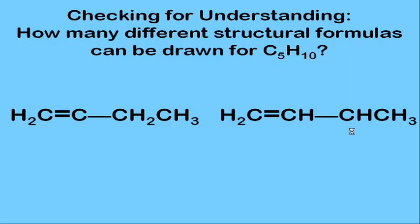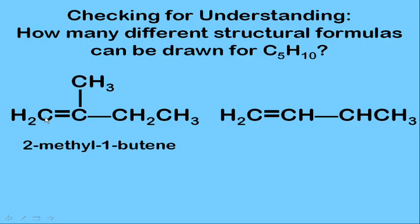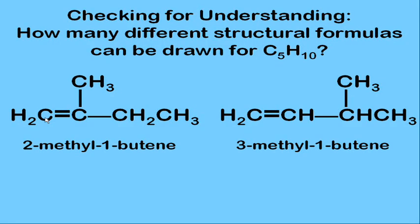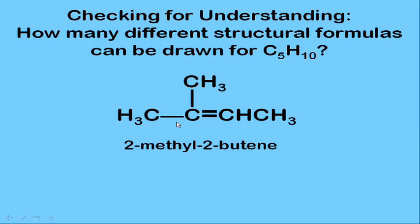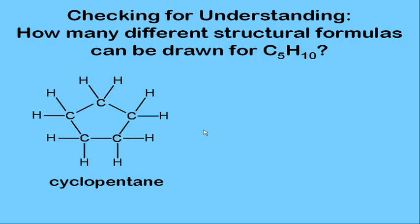With four carbons in a row and a double bond on the end, we have 1-butene. The methyl group can go on carbon two (giving 2-methyl-1-butene) or carbon three (giving 3-methyl-1-butene) — these are unique molecules with different names. There's also 2-butene with a methyl group on carbon two as the only other double-bond possibility.